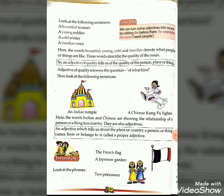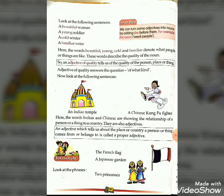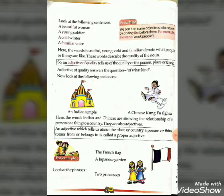Indian and Chinese show the relationship of a person or thing to a country — they are also adjectives. An adjective which tells us about the place or country that a person or thing comes from or belongs to is called a proper adjective.